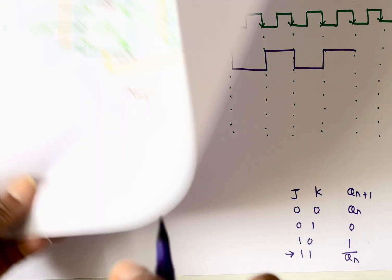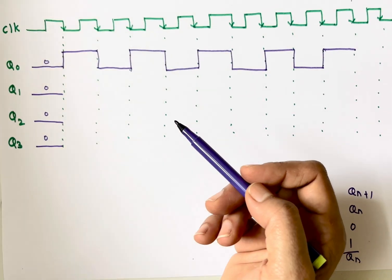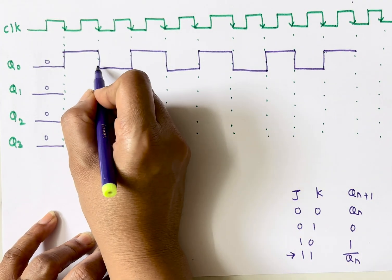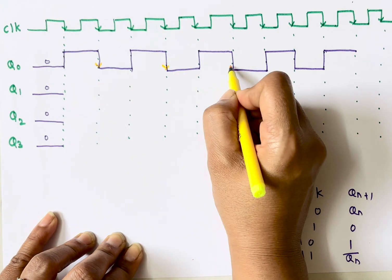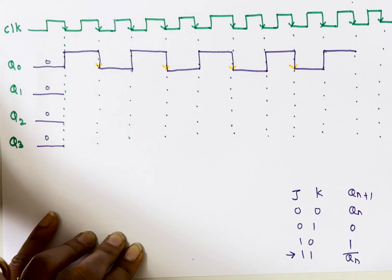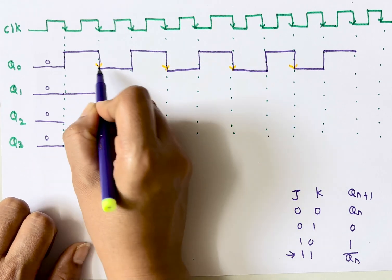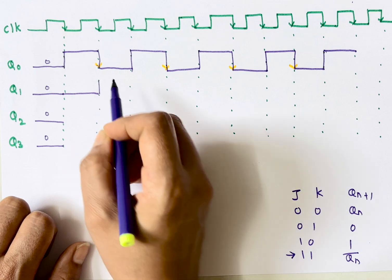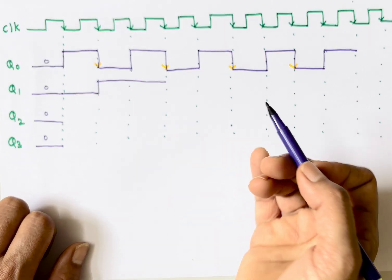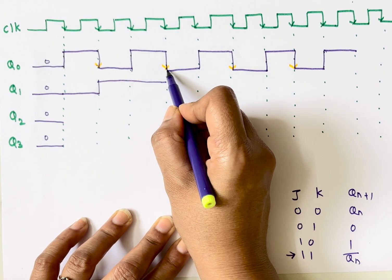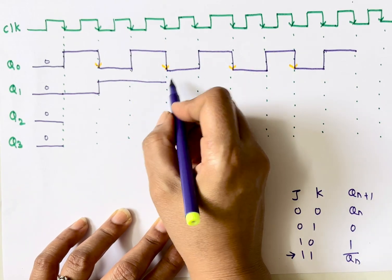For Q1, the clock input is Q0, so we check the negative edges of Q0. At those negative edges of Q0, Q1 will change. Q1 remains 0 up to the first negative edge of Q0. Since J and K are connected to logic 1, and present state was 0, next state becomes 1. It remains 1 up to the next negative edge of Q0.